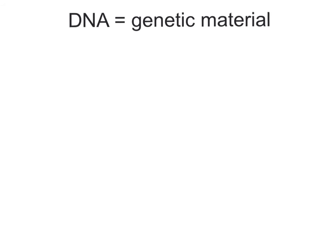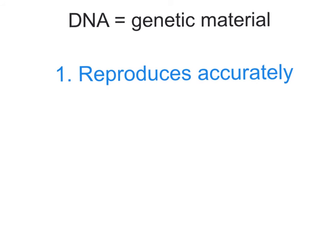DNA is genetic material, as you know, and we've been talking a lot about DNA in this unit. We're going to continue doing so, and it's important that you understand three basic things about genetic material. The first is that genetic material reproduces accurately, and that's necessary for life. That's what we were looking at with DNA replication and how complementary base pairing allows for semi-conservative replication of DNA before cell division.